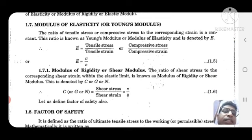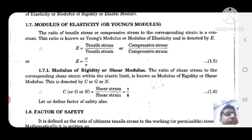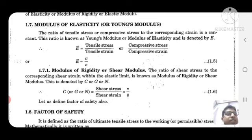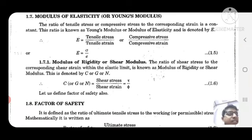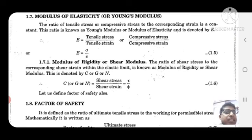The ratio of tensile stress or compressive stress to the corresponding strain is a constant. This ratio is known as Young's modulus or modulus of elasticity, denoted by capital E. E is equal to stress by strain — either tensile stress by tensile strain or compressive stress by compressive strain. So capital E equals sigma divided by epsilon.